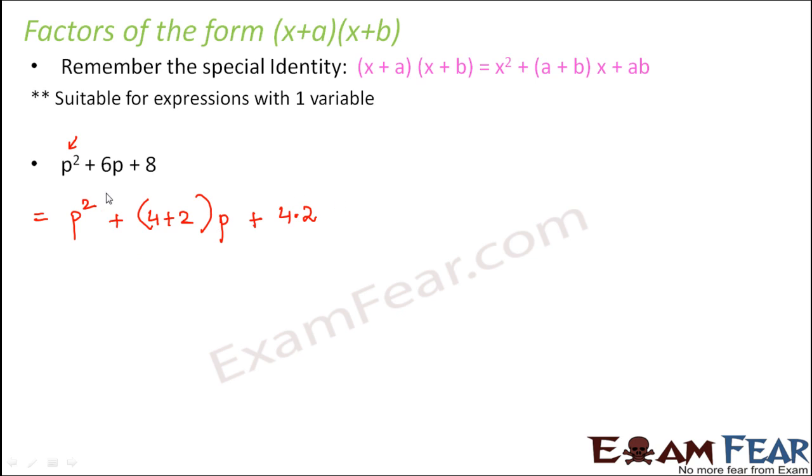So such that now if you compare this expression, so if you compare this with this standard expression, what do you see? For us, a is equal to 4 and b is equal to 2. So this expression is of the same format, just that the value of a is 4, the value of b is 2 and the value of x is p in this case, right?